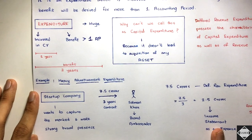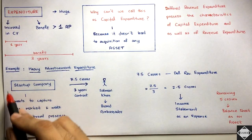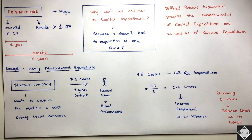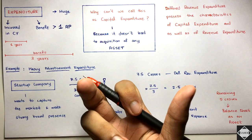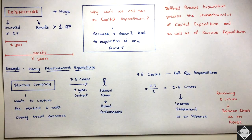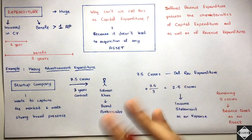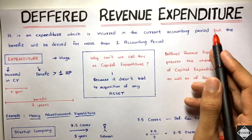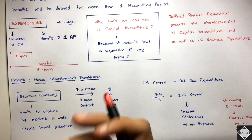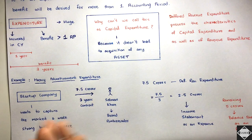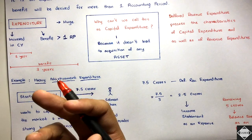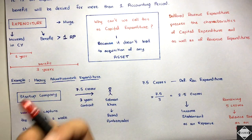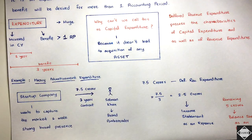Another example: when forming a startup company, you incur various costs — legal fees and other expenses to incorporate the company. All those costs can be grouped into one account called preliminary expenses. You can capitalize that and take it to the balance sheet, then write it off over three or five years. This is also deferred revenue expenditure because forming the company provides long-term benefit.